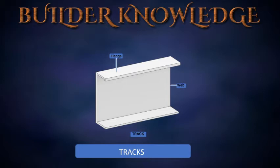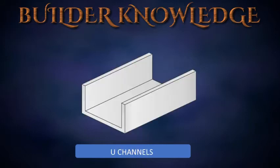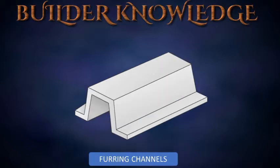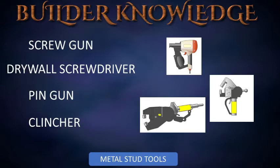Two equal-sized C-shape studs are combined to form headers. Track sections are comparable to top and bottom plates in wood frame construction. They consist of a web and two flanges, and the web width must match the web width of the stud. U-channels are used for bridging studs and attaching walls and ceilings for added strength.